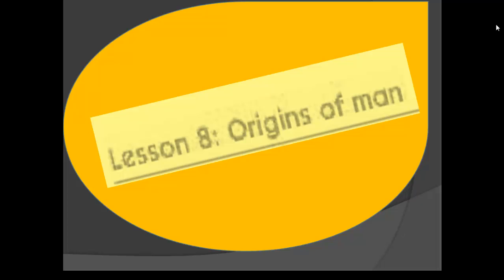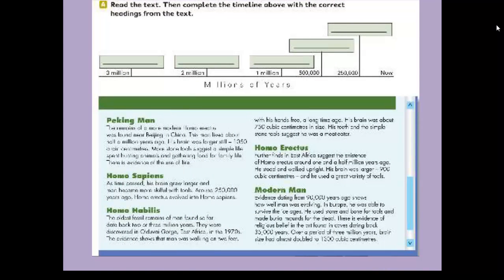Let's read number A. Here we have a text we have to read, and after that we can complete the timeline. Read the text then complete the timeline above with the correct headings from the text. If you notice my students, here we have some spaces in this timeline - one, two, three, four, and five. After reading we can complete the timeline.